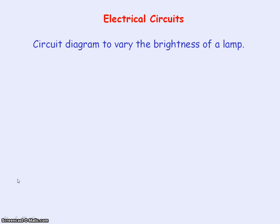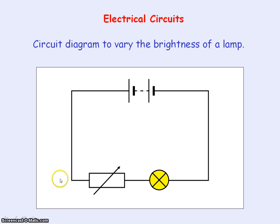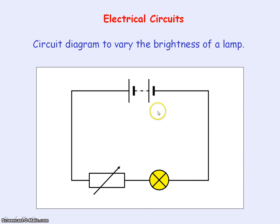Now we're going to look at a circuit diagram that shows how we can vary the brightness of the lamp. What we need to do is connect a variable resistor in series with the lamp. By changing the resistance of the variable resistor, it will change how much current is flowing in the circuit and hence the brightness of the lamp. By decreasing the resistance you will get more current flowing in the circuit and so you'll have a brighter lamp.